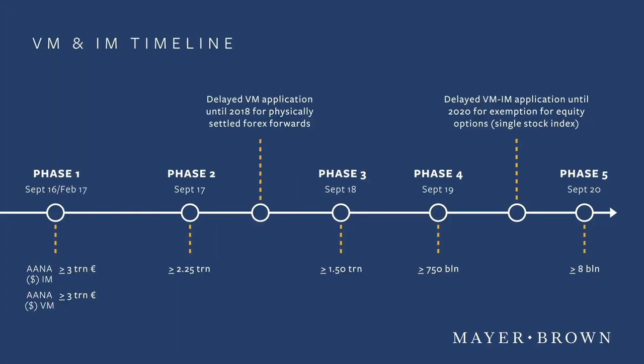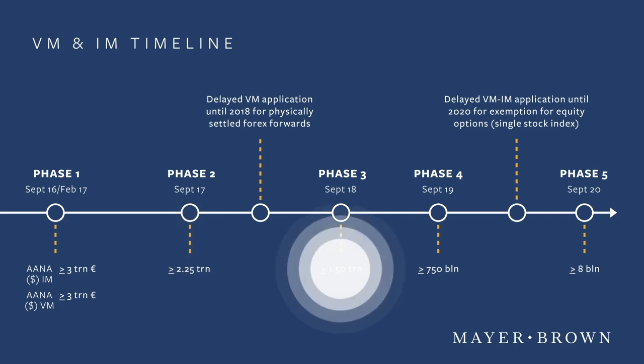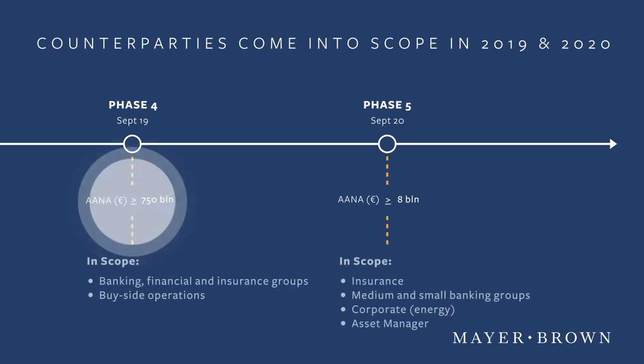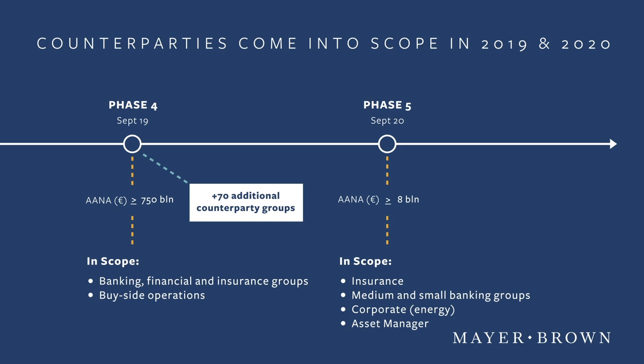The phase one and phase two dealer groups were joined on 1st September 2017, the phase three phase-in date, by a handful of further institutions. The threshold moved down from 2.25 trillion euros to 1.5 trillion euros. As the threshold lowers, the range of financial institutions in scope begins to diversify, and in 2017 it included the first buy-side entity. With a threshold of 750 billion euros, there may be as many as 70 newly in-scope counterparty groups in phase four, which commences and comes into force on 1st September 2019. As with earlier phases, the phase four counterparty groups will need to enter into IM-compliant document sets with paired entities in counterparty groups in their own phase and also earlier phases.